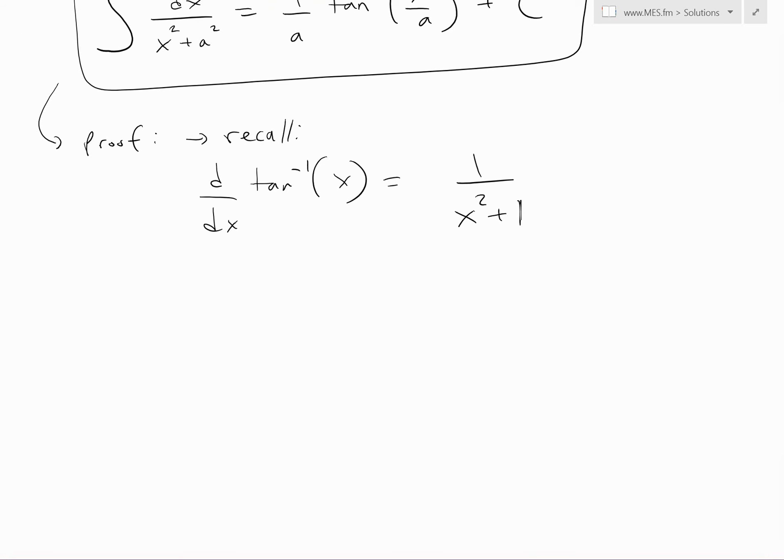Now see what happens if we had d over dx of inverse tan of x over a as opposed to x. We just plug this in inside this formula. So instead of x, we have x over a squared plus 1, and now we need to do the chain rule.